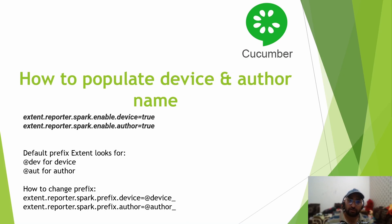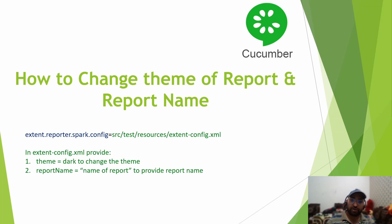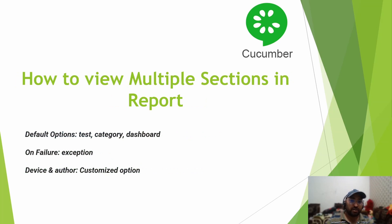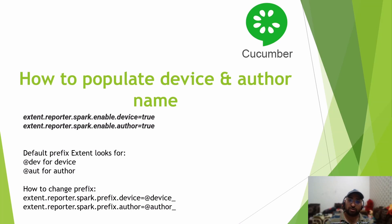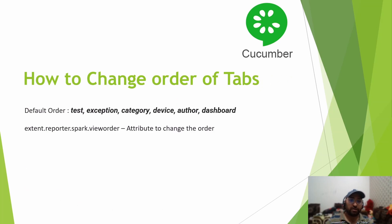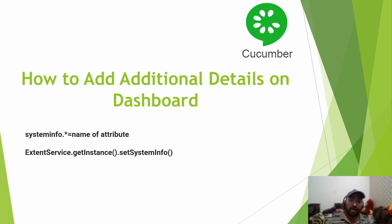Let's quickly recap what we covered. First, we discussed changing the theme by creating a configuration XML file and pointing it in extent.properties. Then we covered populating the report name and document title using spark-config.xml. Next we discussed viewing multiple report sections — default tabs, the Exception tab on failure, and the Device and Author tabs with their configuration. Finally, we covered changing tab order and system variable population.